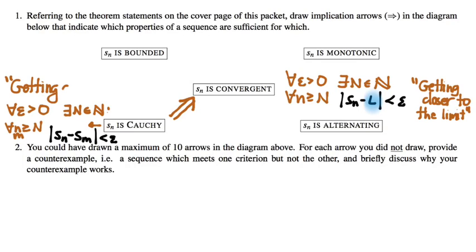And so, actually, the arrow that we drew on this diagram right now is a big deal. It's a big deal that a sequence of terms which gets closer and closer to each other also happens to get closer and closer to a limit. Why might that be surprising, do you think?